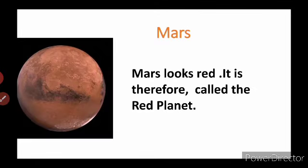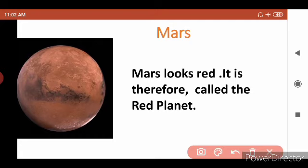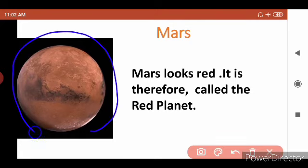Now, Mars. Mars looks red, and it is therefore called the Red Planet. Here is the image of Mars — by looking at it you can understand its color is red, so it is called the Red Planet.